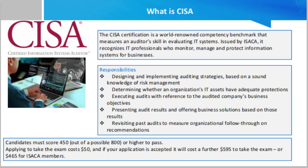ISACA requires that CISA applicants have at least five years of professional experience in IS auditing, control, or security work. You can substitute one year of other IS experience in place of auditing work, or one year of conventional auditing experience in place of IS work. CISA holders are required to take part in ISACA's Continuing Professional Education program.